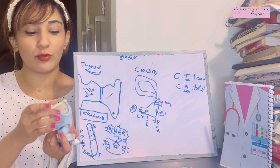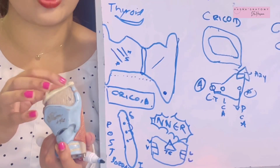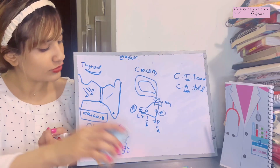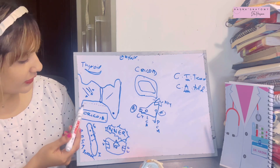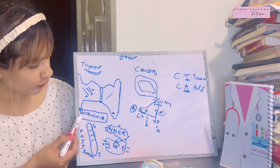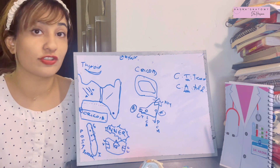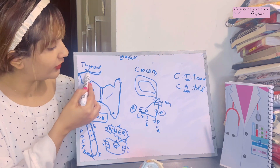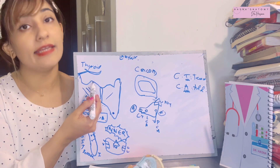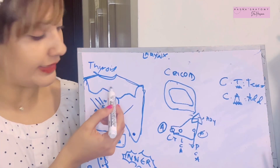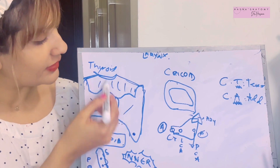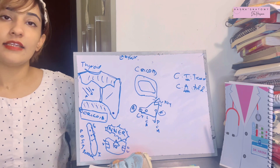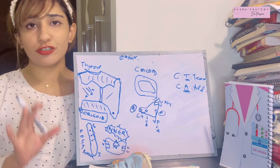The superior cornu joins with the hyoid bone above, and the inferior horn joins with the cricoid cartilage below. The inferior horn forms a proper joint with the cricoid — a full joint cavity, not just a ligament. The superior horns are connected via the lateral thyrohyoid ligament, and both sides are connected by thyrohyoid ligaments, with a median thyrohyoid ligament in the middle — altogether known as the thyrohyoid membrane.